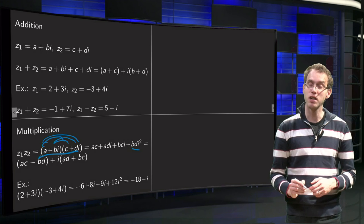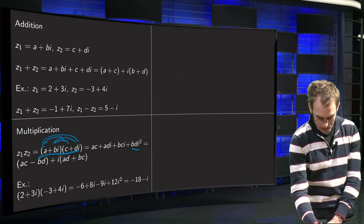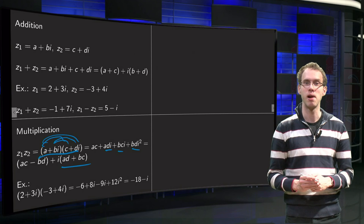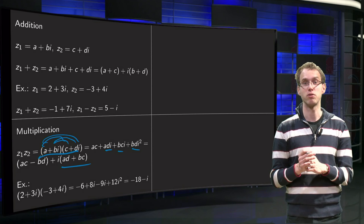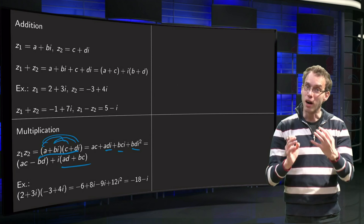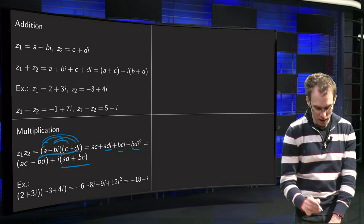So what do we get? We get the real part, ac - bd, plus i times the imaginary part, ad + bc. So there we have the product of two complex numbers. Don't learn this formula by heart, just work out the brackets and remember that i² = -1.